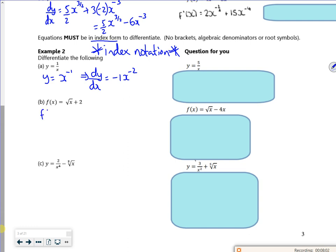So look at this one. So f of x, so that becomes x to the power a half plus 2. So when I differentiate it, it's a half, bring the power to the front, take one off the power, the 2 disappears.